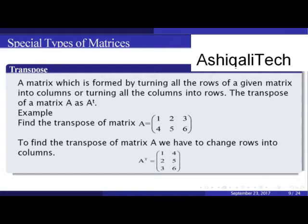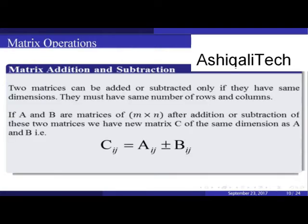To find the transpose of matrix A, we change rows into columns. So A^T has first row [1,4], second row [2,5], and third row [3,6].